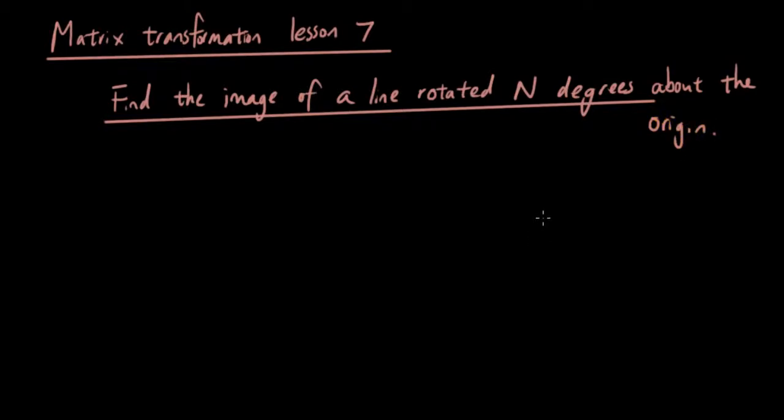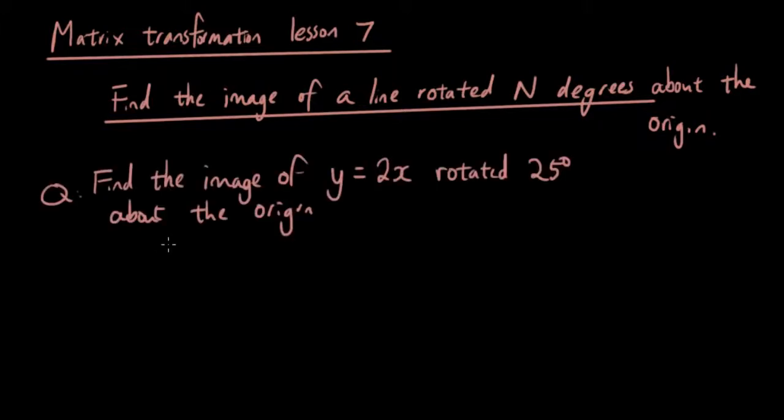So what do I mean by that? Well let's give you guys a problem straight away. The question is, find the image of y equals 2x rotated 25 degrees about the origin.